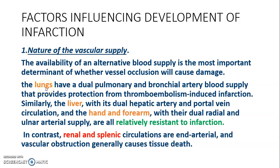The lungs, liver, hand, and forearm have dual blood supply — lungs have pulmonary and bronchial arteries, the liver has the hepatic artery and portal vein, and the hand and forearm have dual radial and ulnar arterial supply. These organs are relatively resistant to infarction, while renal and splenic circulations are end-arterial and vascular obstruction generally causes tissue death.